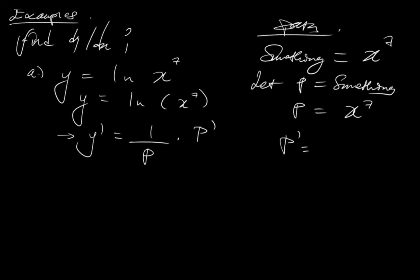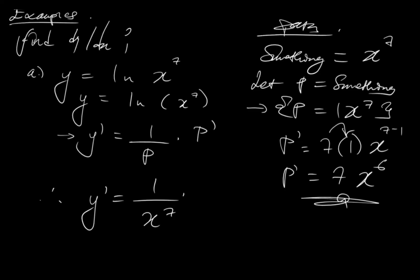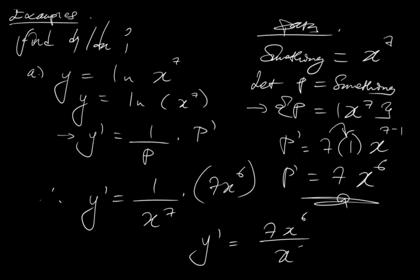So p' is equal to 7 times 1, which gives you 7, times x to the 7 minus 1, which is x⁶. So y' is 1 over p times p'. Therefore, substituting: y' equals 1 over p — where p is x⁷ — times p', which is 7x⁶. Therefore y' can be written as 7x⁶ over x⁷. And this is your final answer. Others would prefer to reduce this — you can cancel out 6 x's from the 7 x's, and you just have 7/x as your final answer.